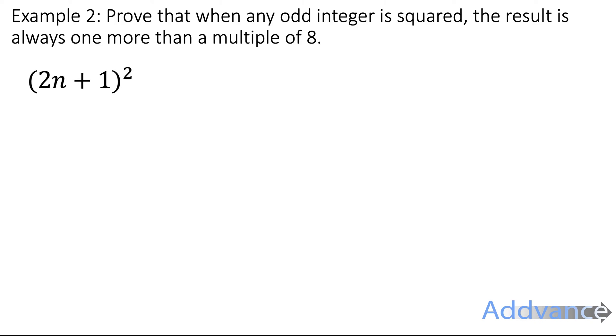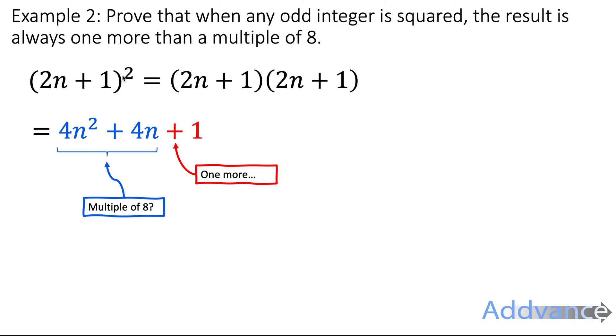Square it like this. 2n plus 1 squared. And we can expand that bracket: 2n plus 1 times 2n plus 1. When you expand that using just expanding, you get 4n squared plus 4n plus 1. Now, this definitely looks like 1 more. So we've got a 1 more. But is that 1 more than the multiple of 8?